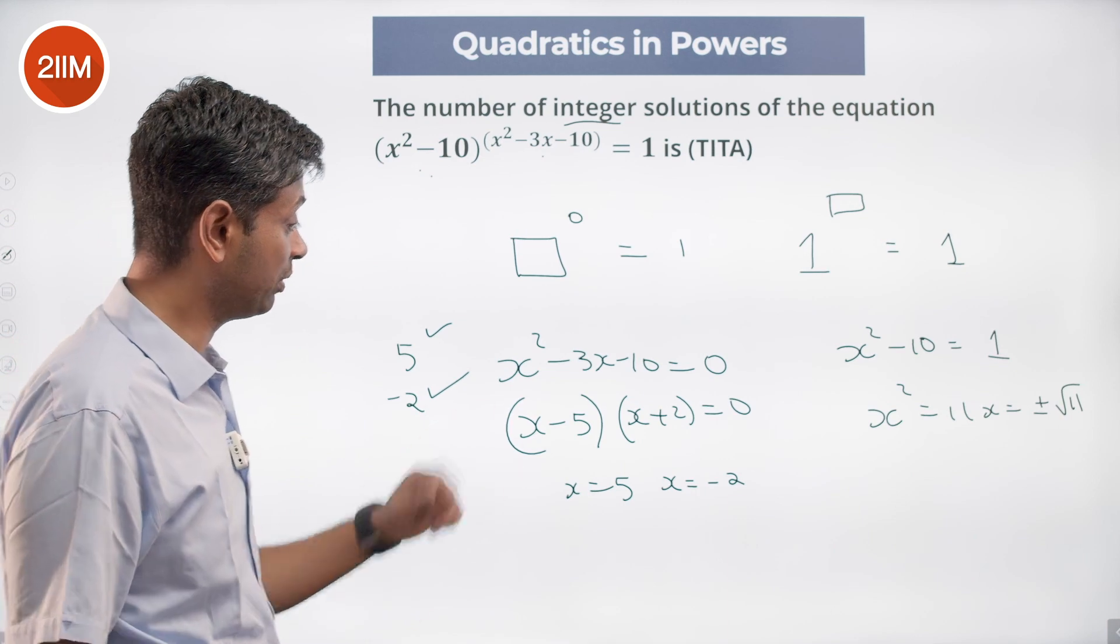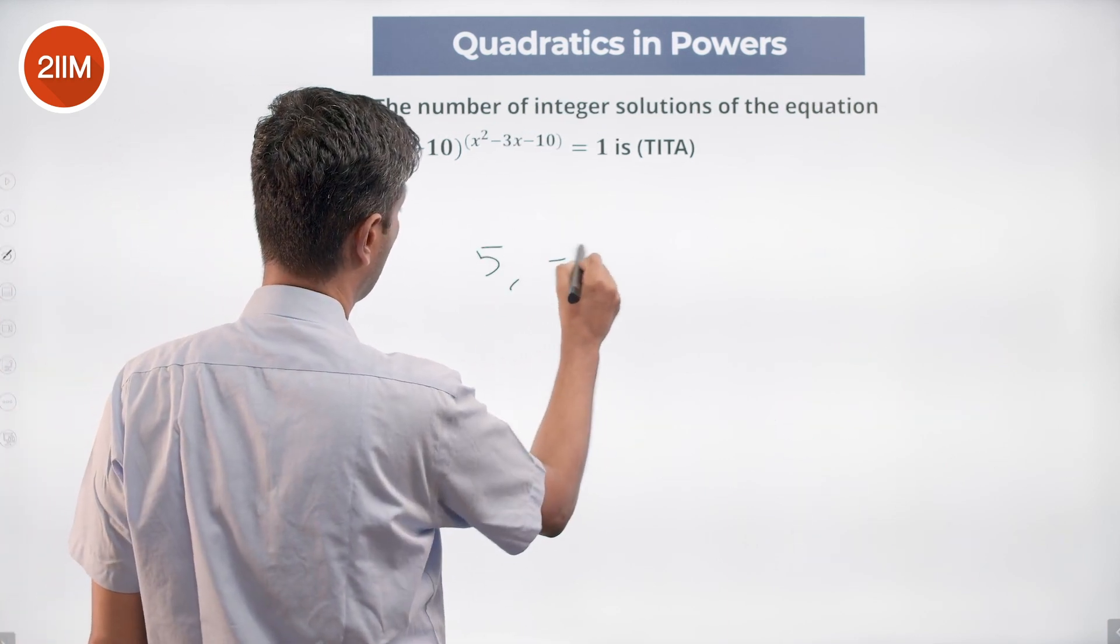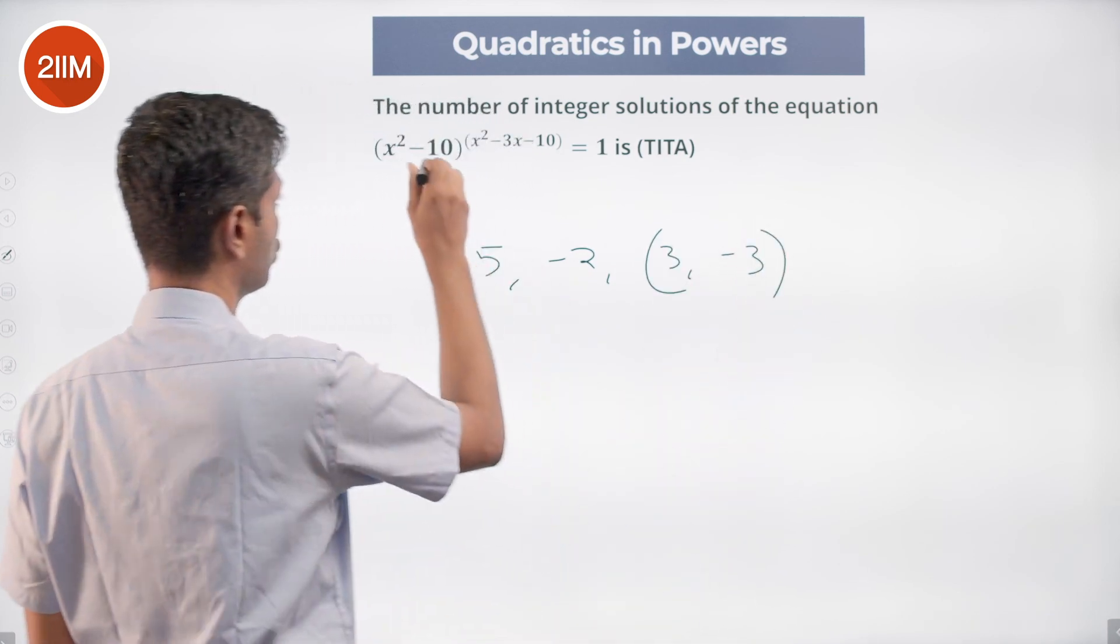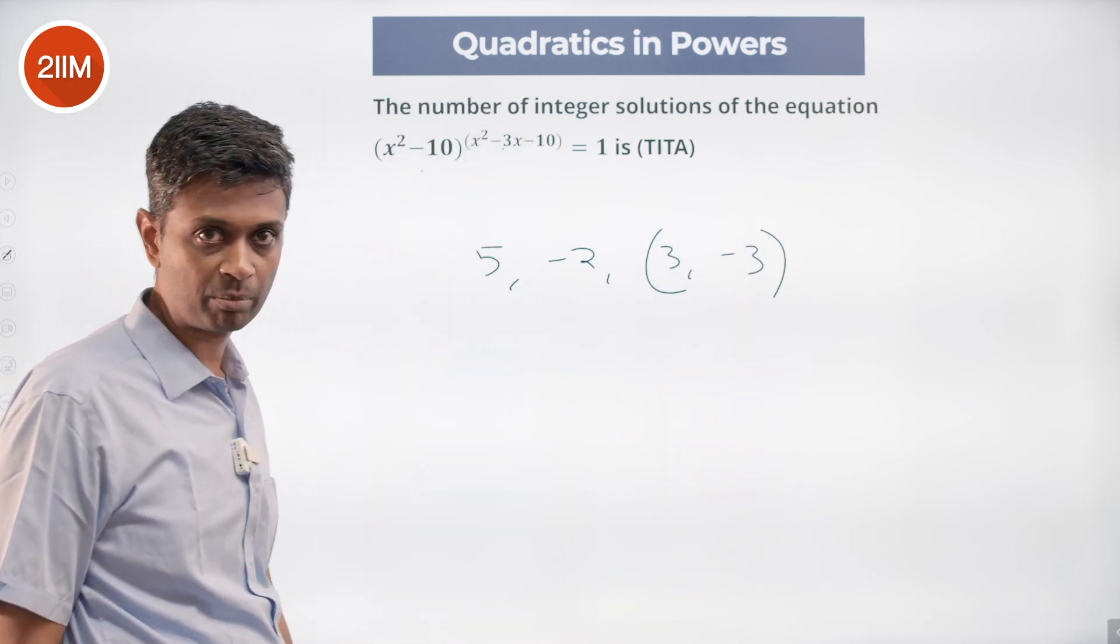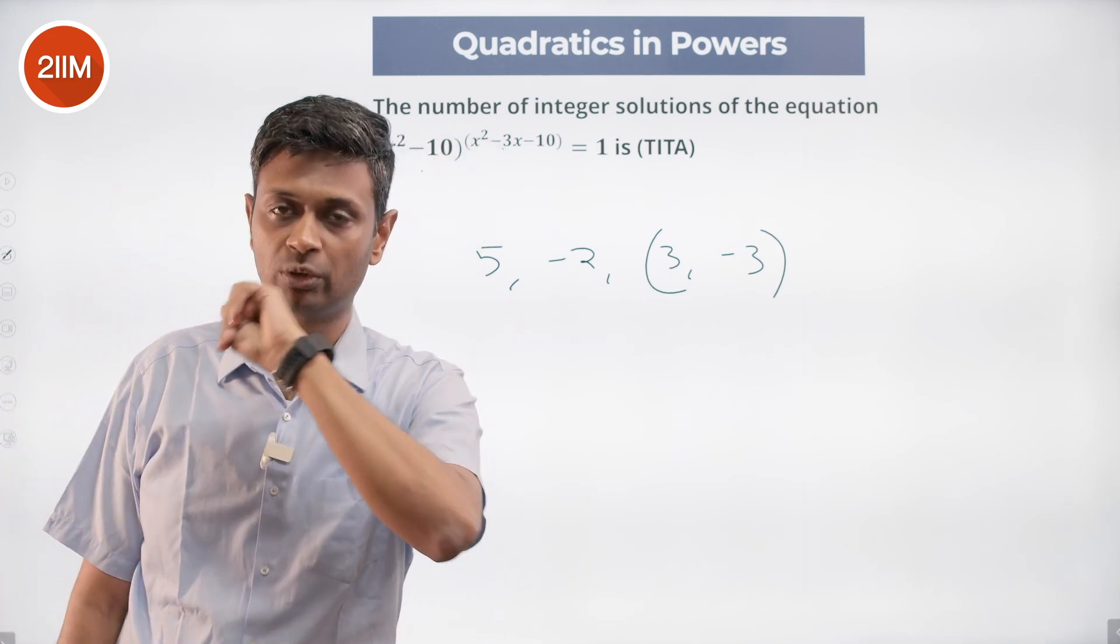Therefore x could be 3 or -3. We already got that x could be 5 or -2. So we have 5, -2, 3, -3. For 3 and -3 this goes to -1 to an even number, we are very happy. For 5 and -2, this goes to some number to the power 0, we are happy. 4 different values are possible.